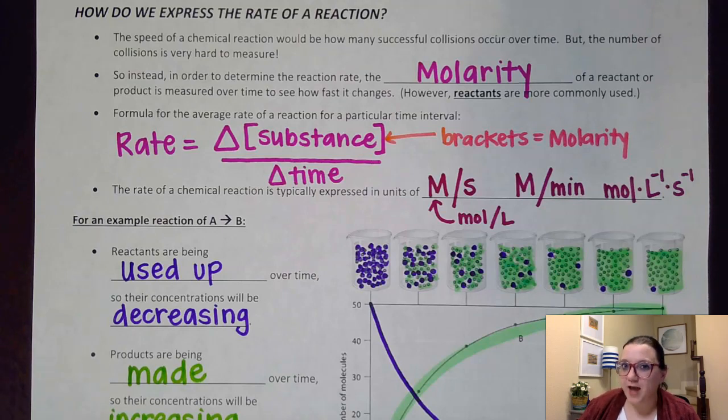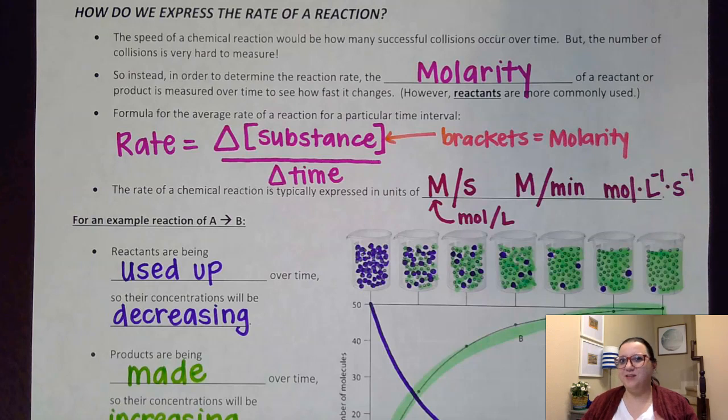Now the rate of a chemical reaction would really be the speed at which collisions are occurring over time. The problem with that is that it's really hard to measure collisions occurring over time because we don't have any kind of binoculars or microscope where we could look into a reaction and actually count every collision that's taking place.